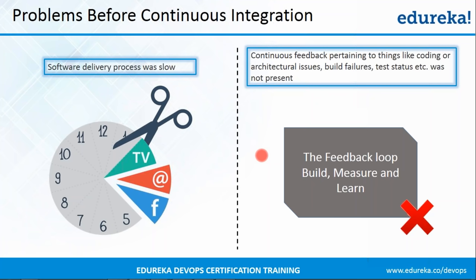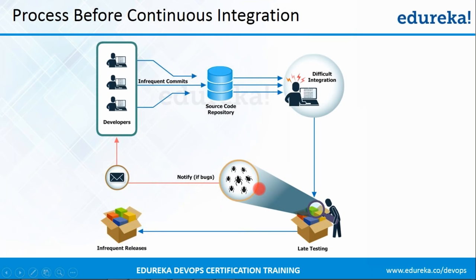So we have a question from Anusha — she's asking about the feedback loop that was present in the process shown before continuous integration. Very good question, Anusha. The feedback loop shown is present when the entire source code of the application is built and tested, and then only the developers are notified about bugs. When we talk about continuous feedback, suppose a developer makes any commit to the source code repository — at that time the code should be pulled, built, and the developer should be notified about the build status. Then once it is deployed onto the test server for testing, whatever the test status is, the developer should also be notified about it.